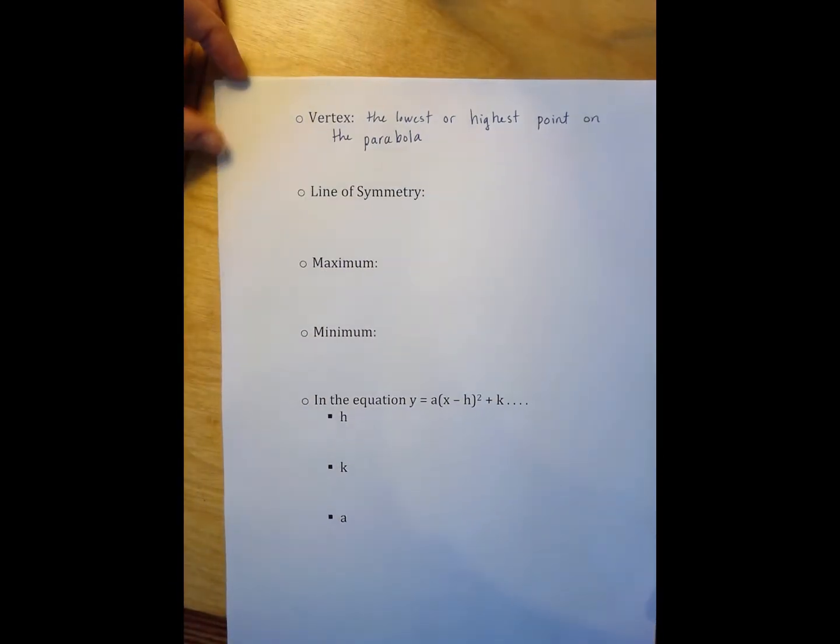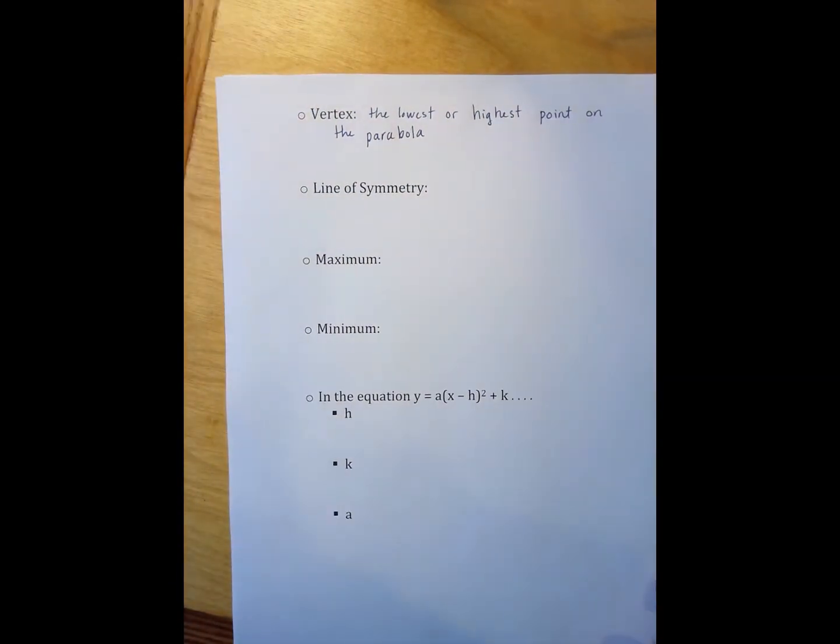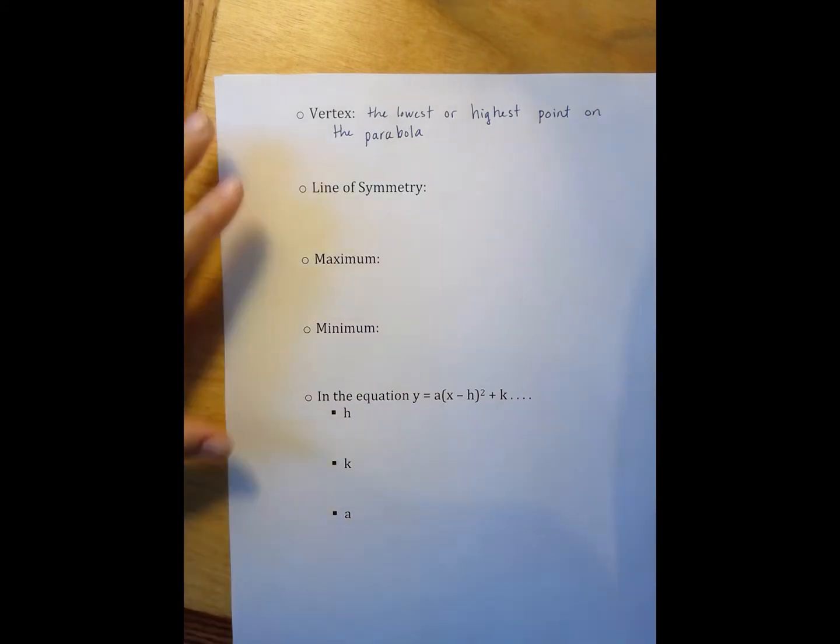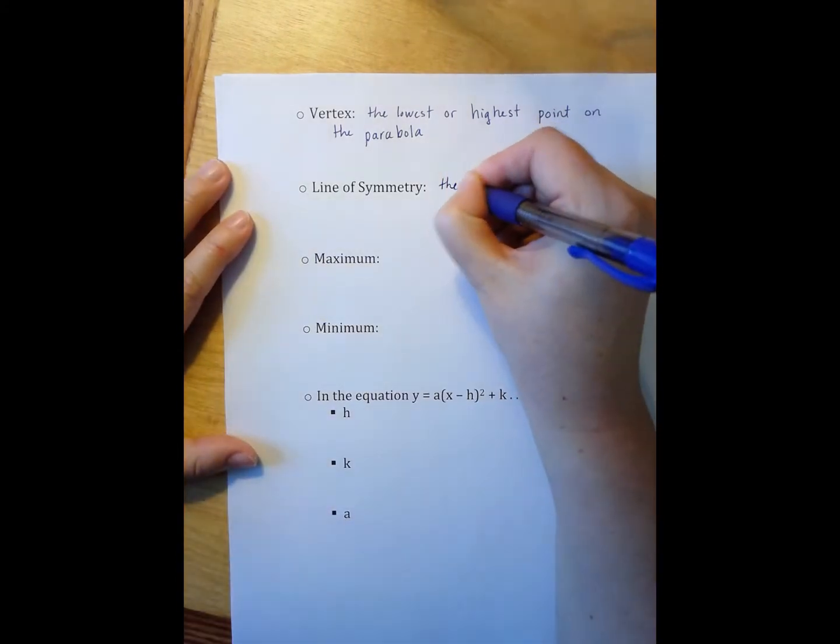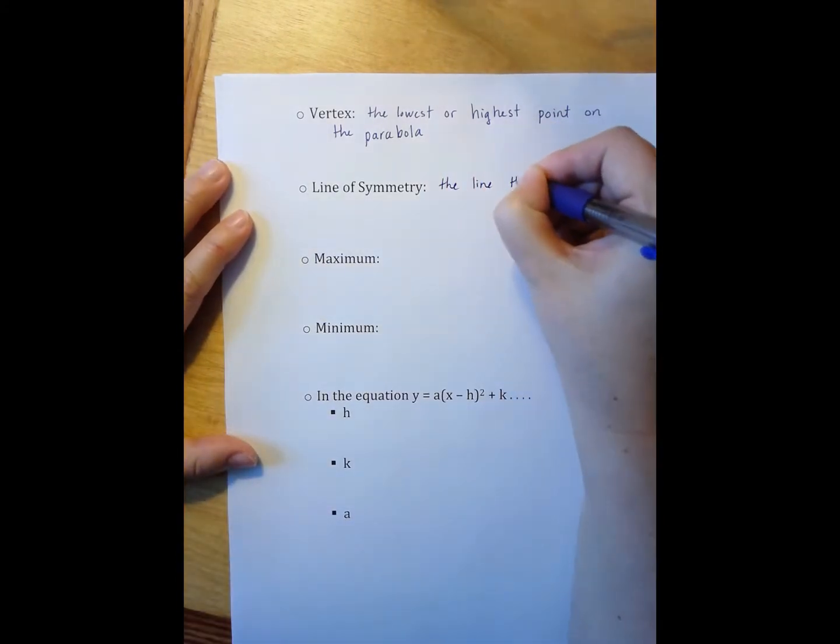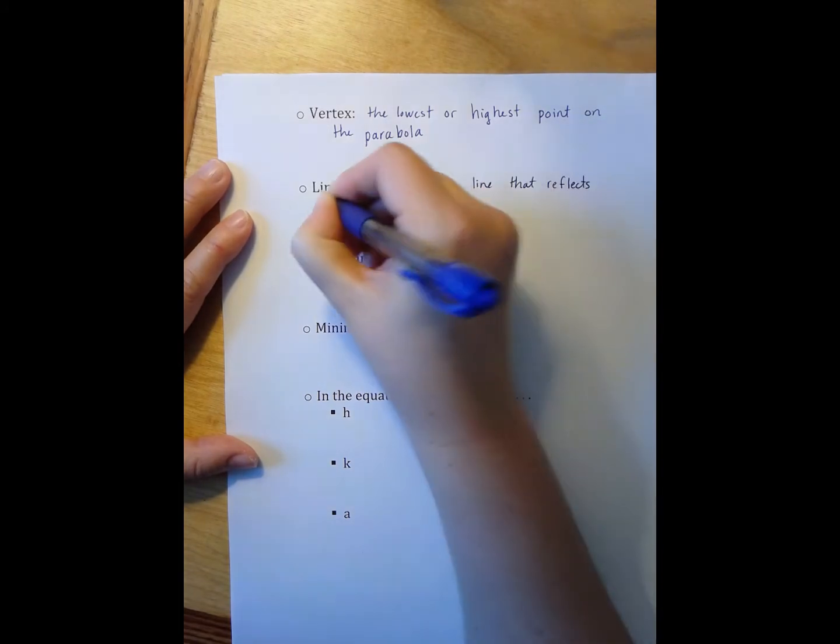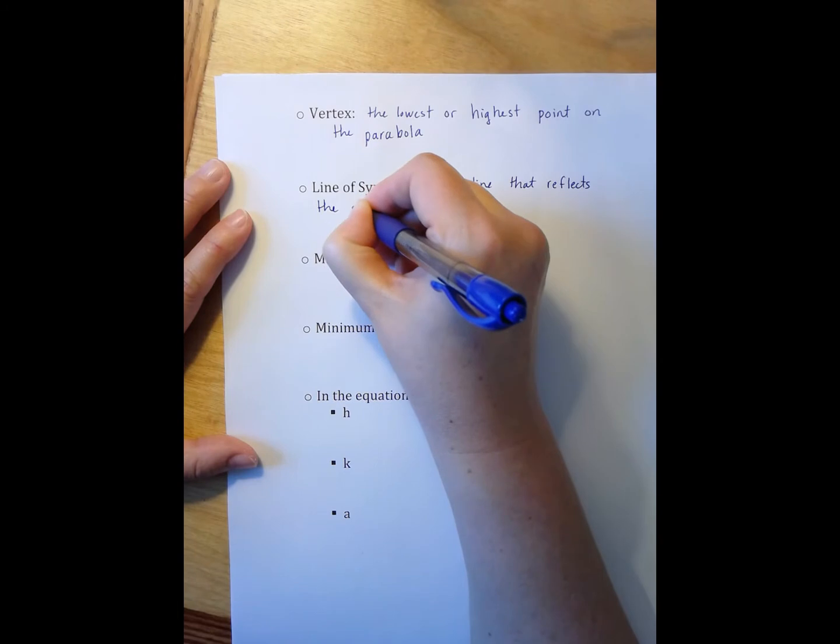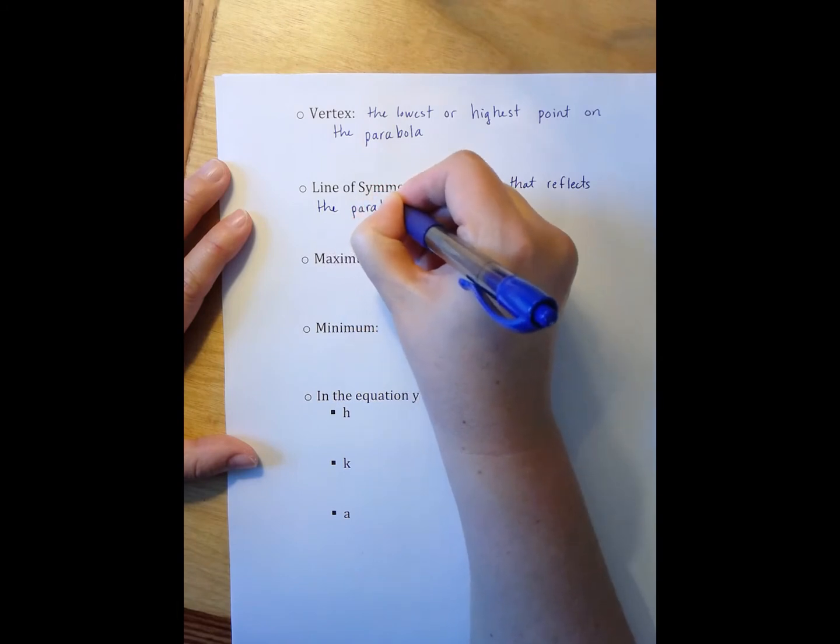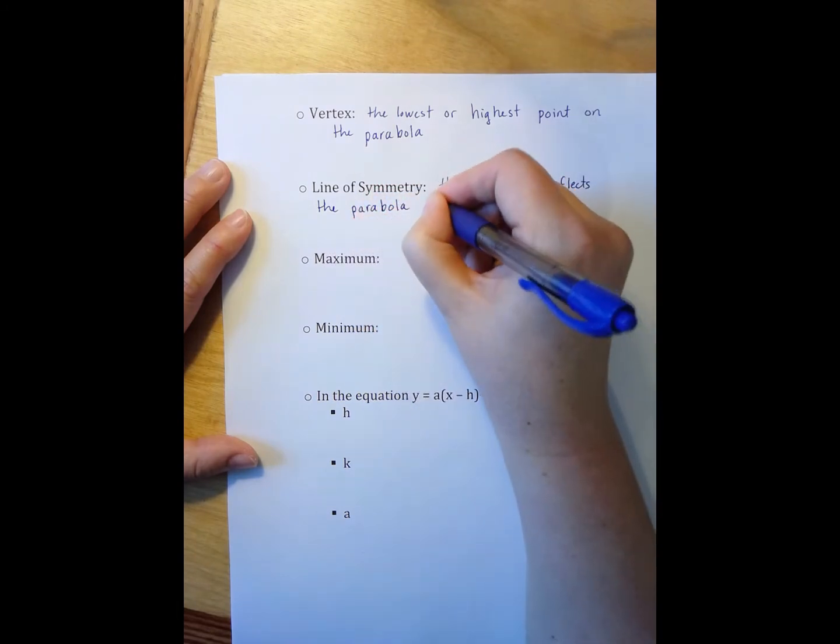All parabolas being U shaped have a line of symmetry. The line of symmetry is the line that reflects the parabola back onto itself.